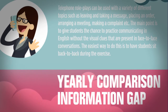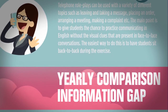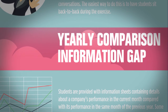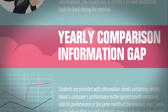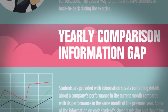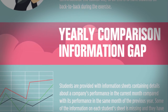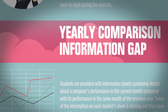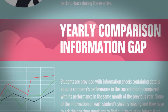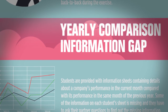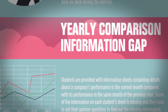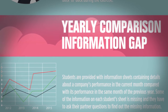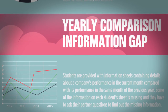Yearly Comparison Information Gap. Students are provided with information sheets containing details about a company's performance in the current month compared with its performance in the same month of the previous year. Some of the information in each student's sheet is missing, and they have to ask their partner questions to find out the missing information.